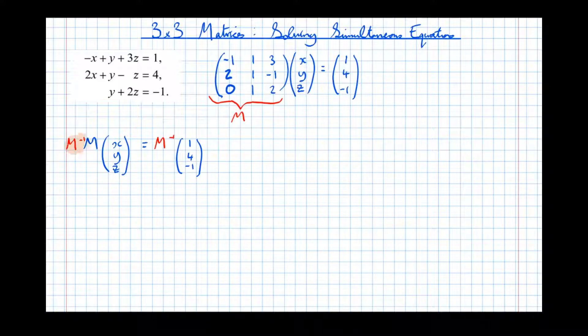So notice here that I've got an inverse of the matrix touching its corresponding matrix. That always leads to the identity matrix, or the matrix equivalent of the number 1. Therefore, this implies that we get x, y, z equals inverse M of 1, 4, -1. We've got an equation now explicitly that gives us x, y, and z in terms of what we already know.